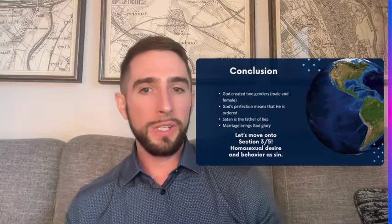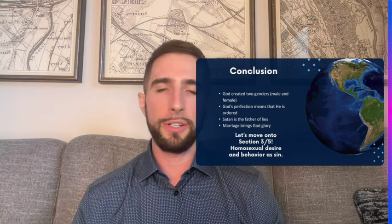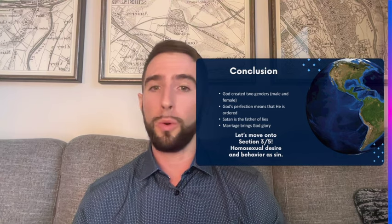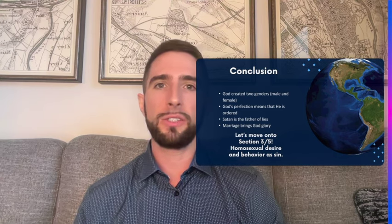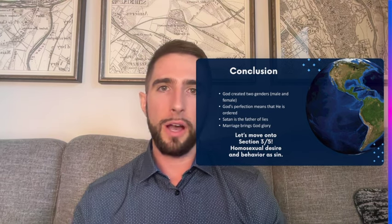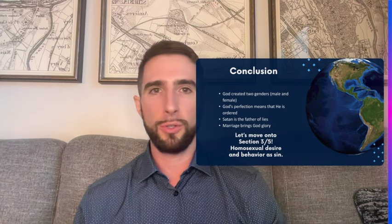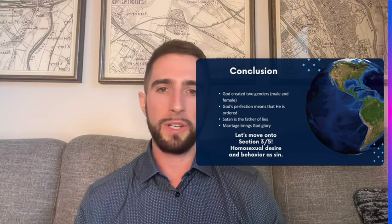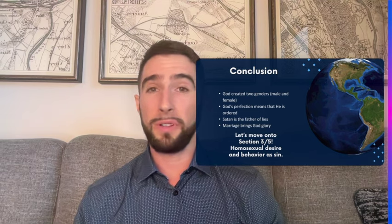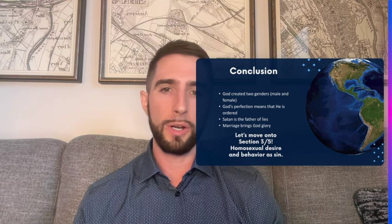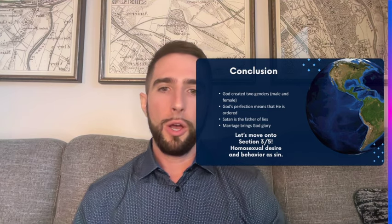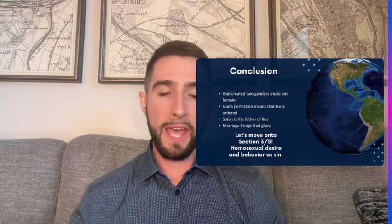In conclusion for section two: God created two genders, male and female. God's perfection means that he is ordered. Satan is the father of lies and the one of disorder; God is of order. Marriage brings God glory — marriage God's way is one man, one woman, husband and wife. It points to the gospel of Jesus Christ and gives God pleasure because it brings him glory. Let's move on to section three: homosexual desire and behavior as sin.